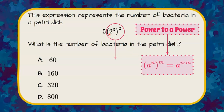I'm going to rewrite this as five times two to the exponent three times two, because it's power to a power so I can multiply the exponents. Three times two is six, two to the sixth is 64, and five times 64 is 320.